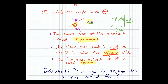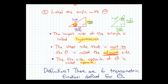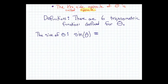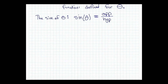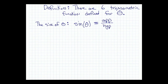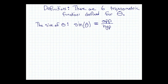The sine of theta equals the opposite side over the hypotenuse. That's the definition. The cosine of theta — written as cos(θ) — also comes from two sides of the triangle.